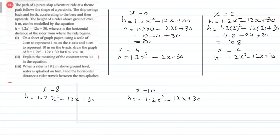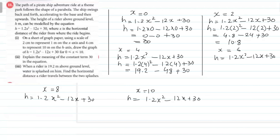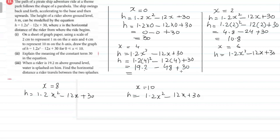x = 4 کے لیے: 1.2(4²) − 12(4) + 30 = 1.2(16) − 48 + 30 = 19.2 − 48 + 30۔ تو 19.2 + 30 = 49.2 minus 48 = 1.2۔ تو h کی value 1.2 آئی۔